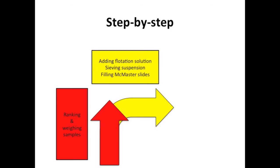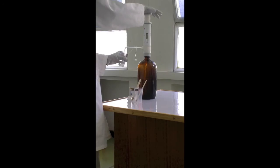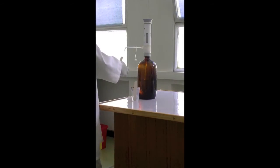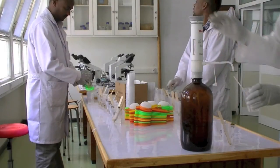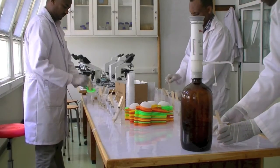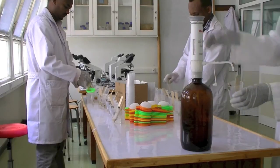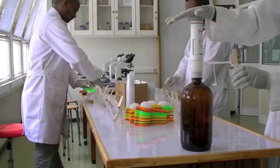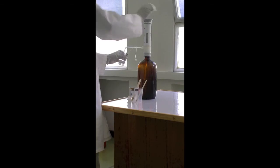Step 2: Adding flotation solution, sieving the suspension and filling the McMaster slides. At one side of the second table, flotation solution is added to the sample. The sample is then immediately brought to the opposite side of the table, where the suspension is sieved by two different people. Similar to the first step, the two people sieve the suspension in parallel. In this setup, we replace the measuring cylinder by a dispenser, which not only speeds up the process, but also increases the repeatability within and between laboratory technicians.